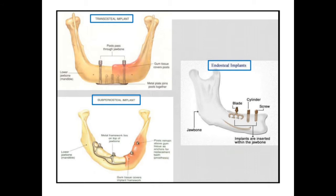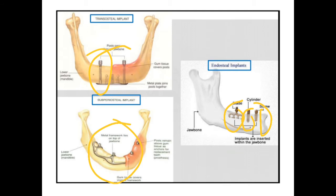There has been a lot of research about implants. This slide shows different shapes — blade shape, cylindrical shape, screw shape — and also trans-osseous implants. This is a subperiosteal implant, placed just below the periosteum. There has been a lot of research about implant shapes. Now we are using endosseous implants — endo means inside and osseous means bone — so anything placed inside the bone is an endosseous implant.